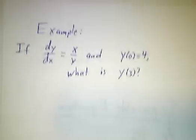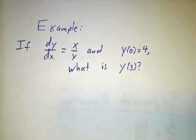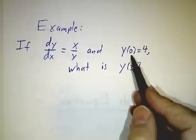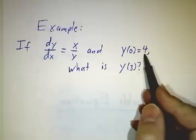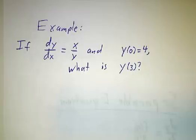So let's suppose that we're told that dy/dx is x over y, and that when x is 0, y is 4. And the question is, what is y when x is 3? And for that matter, what is y in general?